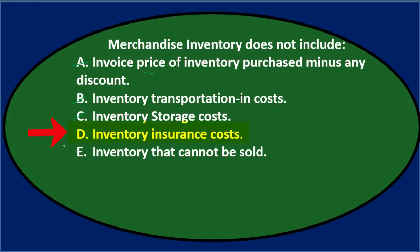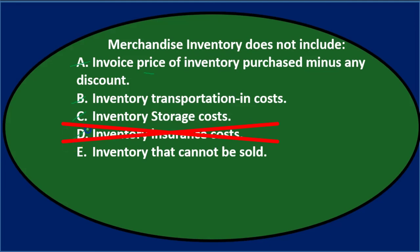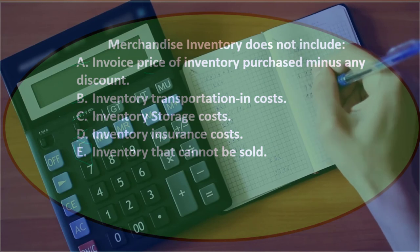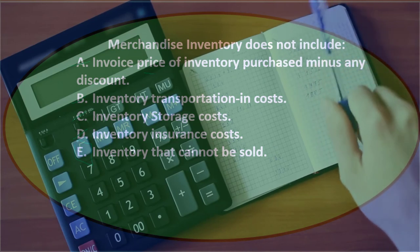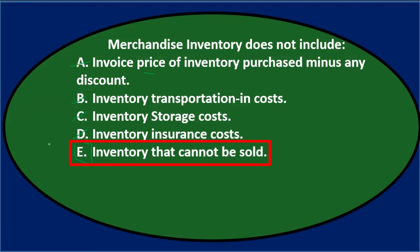E says inventory that cannot be sold — and that's got to be it, because we've crossed everything else out. It makes sense: if inventory cannot be sold, it should no longer be in inventory — we should write it off as a loss. It shouldn't be in the inventory price because the definition of inventory is something we're holding with the expectation of selling. So the answer is: merchandise inventory does not include E — inventory that cannot be sold.